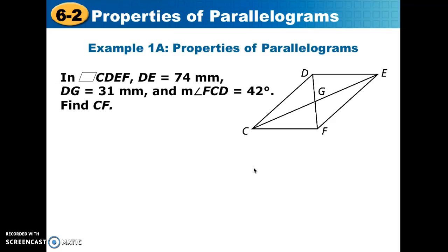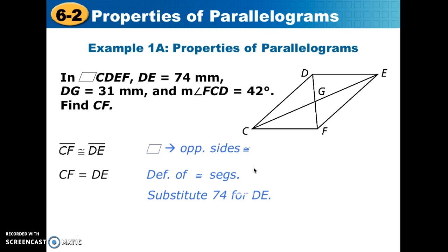We were told that this is a parallelogram, so we know that opposite sides are congruent. That means that segment CF is congruent to segment DE. We know segment DE is 74, so we can substitute in and say segment CF is 74, 74 millimeters long.